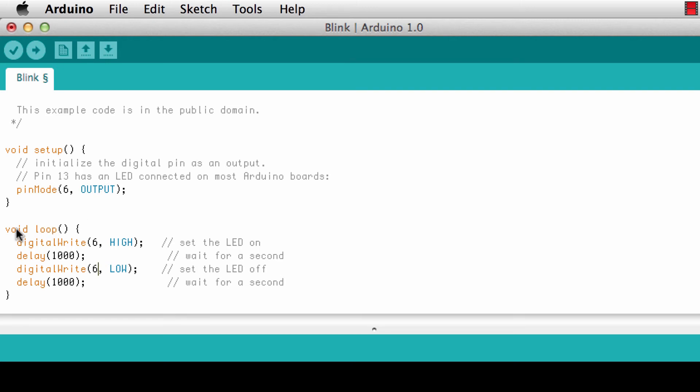So now we define pin number 6 as an output in the setup function. Then in the main loop we write high, so that means 5 volts on the pin, and then we wait 1 second, 1000 milliseconds. Then we write low and that gives us 0 volts on this pin, and we wait another second. So we get a 0.5 Hertz blink.